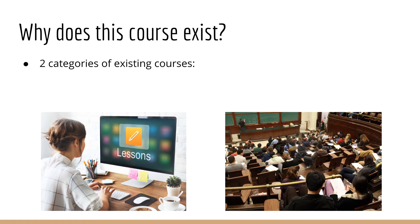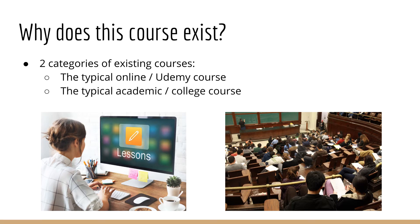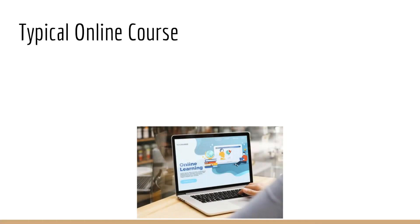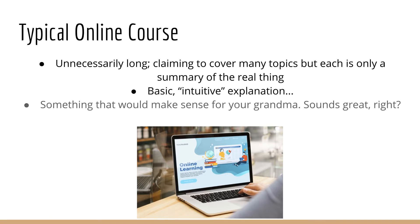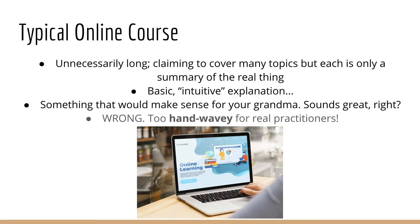The first kind is the typical Udemy course, which also applies to most other online courses. The second kind is the typical academic course, which you might learn in college. The typical Udemy course proceeds like this: these courses are unnecessarily long for the topics they cover. They claim to cover many topics, but they are more like summaries instead of real understanding. For each topic, you get a basic intuitive explanation — the same explanation you could tell to your grandma. In other words, it's too hand-wavy for actual practitioners. If you want to do machine learning in the professional world, you have to know more than this.